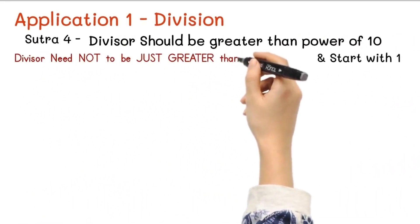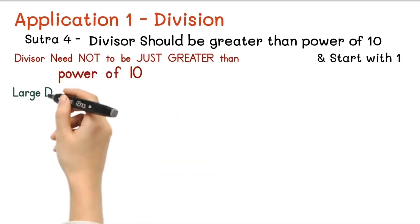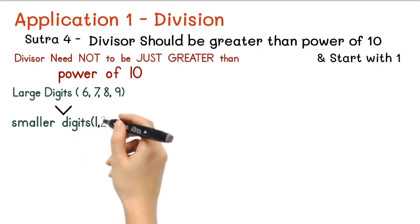So in this case, we will convert large digits 6, 7, 8, 9 into smaller digits 1, 2, 3, 4 by using Vinculum method.